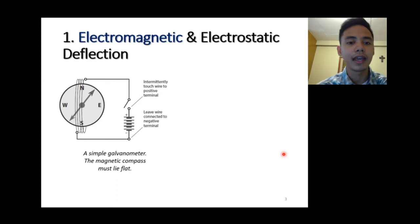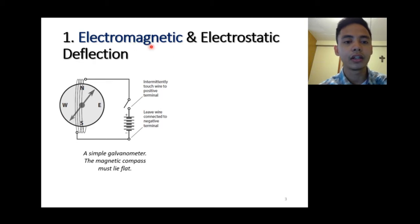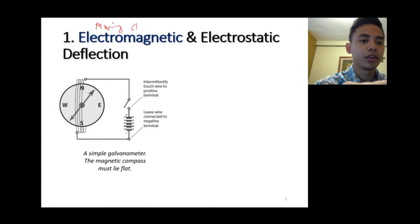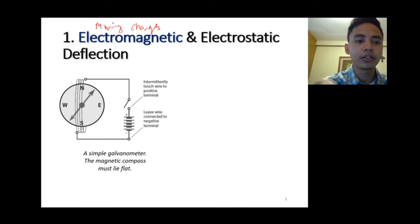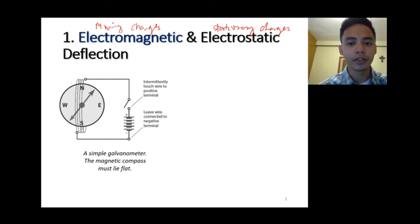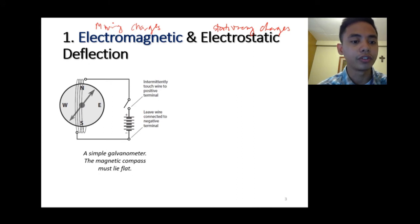Starting with electromagnetic and electrostatic deflection: electromagnetic deflection is caused by moving charges — that is, current. Because of the presence of current, there is deflection. Electrostatic deflection involves stationary charges. When two bodies have different amounts of charge, an electric field exists between them, which also creates a deflection.